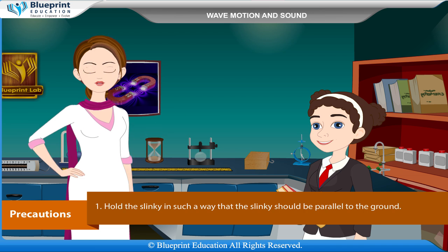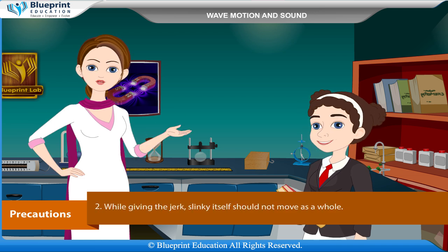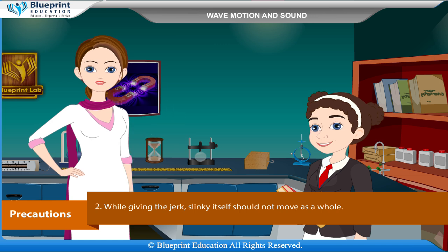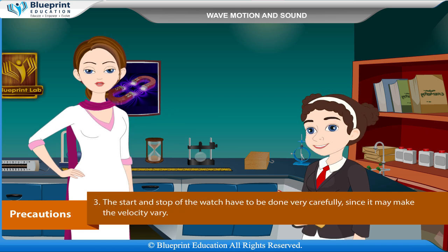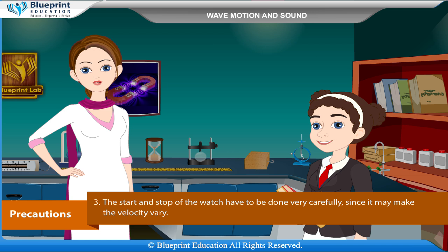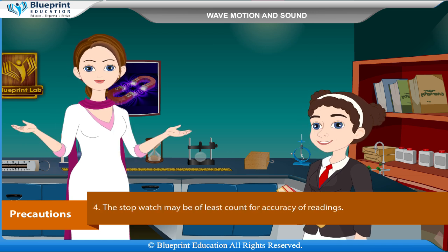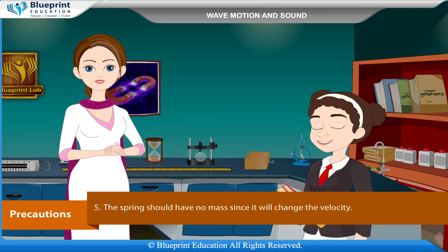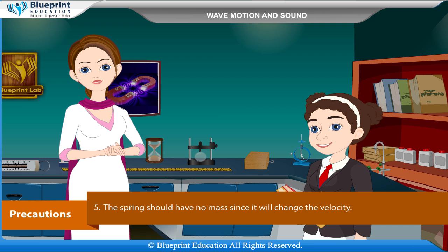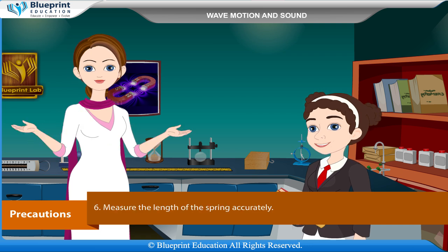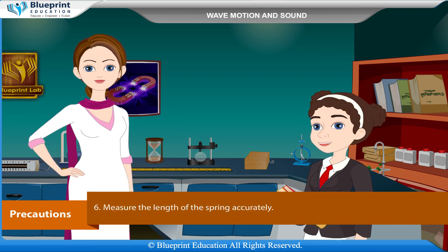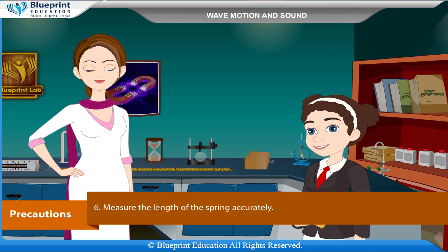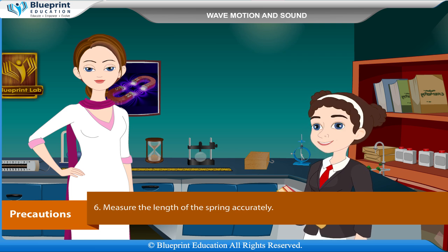Precautions: Hold the slinky in such a way that it is parallel to the ground while giving the jerk. The slinky itself should not move as a whole. The start and stop of the watch have to be done very carefully, since it may affect the velocity measurement. The stopwatch should be of least count for accuracy of readings. The spring should have negligible mass, as added mass will change the velocity. Measure the length of the spring accurately. Thank you — this experiment has made the concept very easy to understand.